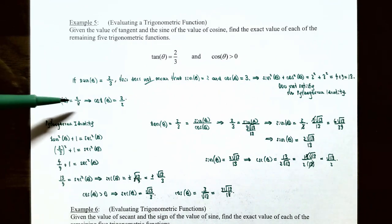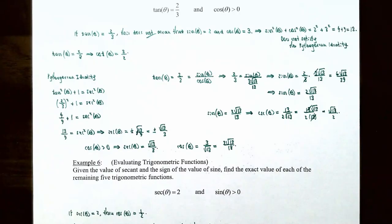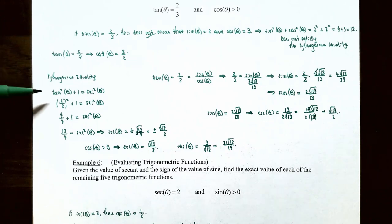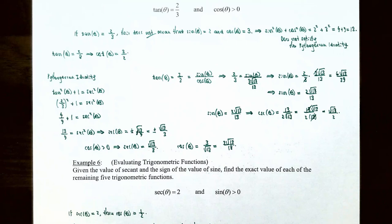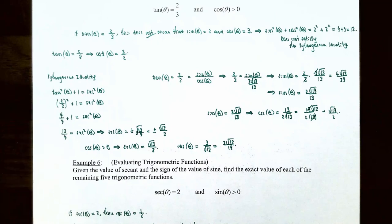Since we know tangent of theta is two-thirds, we automatically know cotangent, which is the reciprocal of tangent. Cotangent of theta is the reciprocal of two-thirds, which is three-halves. Now let's find the secant function using the Pythagorean identity: tangent squared of theta plus 1 equals secant squared of theta. Replacing tangent of theta with two-thirds, we have two-thirds squared plus 1 equals secant squared of theta. Two-thirds squared is four-ninths, so four-ninths plus 1, which equals thirteen-ninths, equals secant squared of theta.